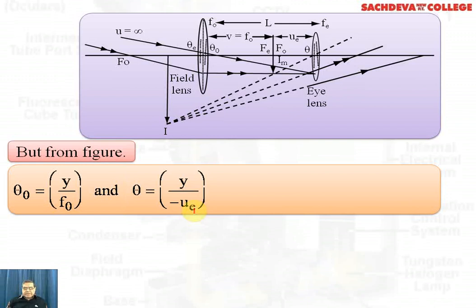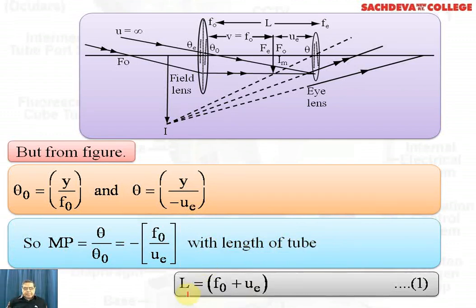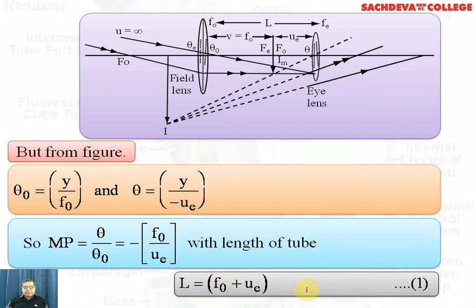From the figure, theta-naught equals y over F0 and theta equals y over (minus Ue). Dividing theta by theta-naught, y cancels, giving theta over theta-naught equals minus F0 over Ue. The length of the tube L equals F0 plus the object distance from the eyepiece, i.e., the focal length of objective plus the focal length of eyepiece.